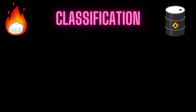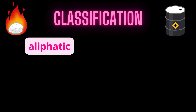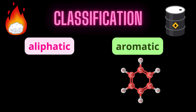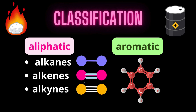Hydrocarbons can be classified into two main types: aliphatic and aromatic. Aliphatic hydrocarbons are further subdivided into three subgroups based on the types of bonds between carbon atoms: alkanes, alkenes, and alkynes.